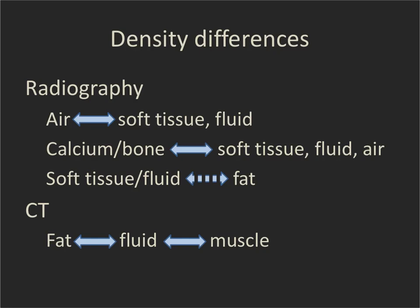With radiography, these density differences mean we can easily see the difference between air and soft tissue or fluid, and between calcium, bone, and soft tissue. However, we may not see the differences between soft tissue, fluid, and fat because those differences are much less. Radiography is less sensitive to density differences than CT, which is very sensitive to small differences and can distinguish fat, fluid, muscle, and even more subtle densities depending on windowing.